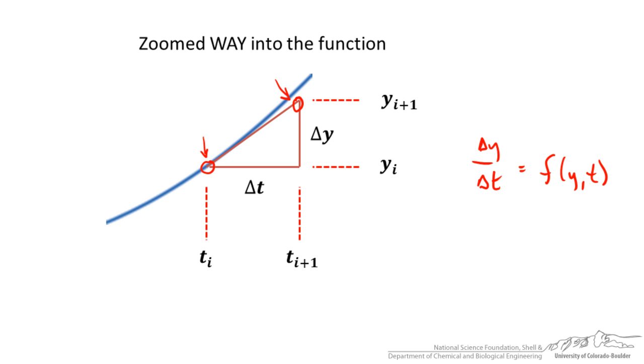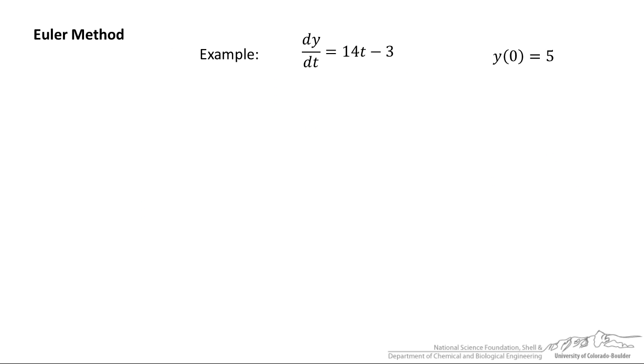And so you can estimate the actual function knowing the derivative. So let's go through an example. We have dy/dt is equal to 14t minus 3, we have our initial condition, we know that at time zero our function value is equal to 5.